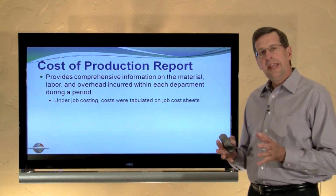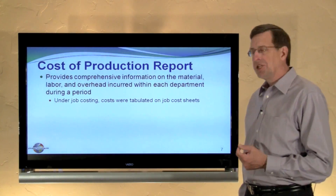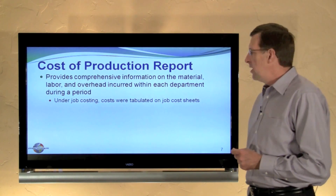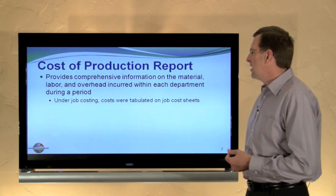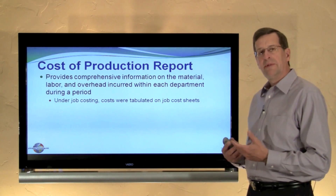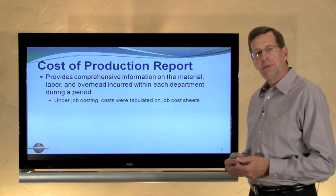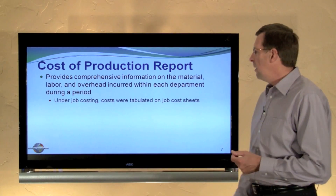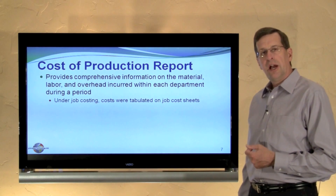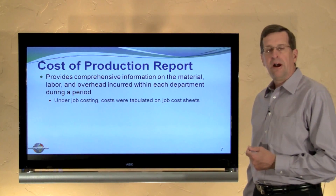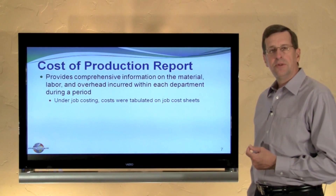The cost within each department is captured on a cost of production report. We'll illustrate this over the next two modules. But for now, to summarize, it provides a comprehensive information source about the material, labor, and overhead that's incurred or assigned to each department during a period — whereas under job costing, costs were tabulated on job cost sheets. We'll see how the cost of production report is built up over the next two modules.